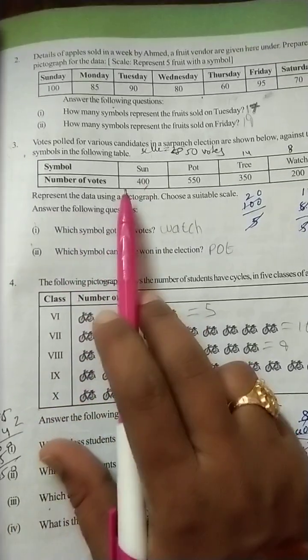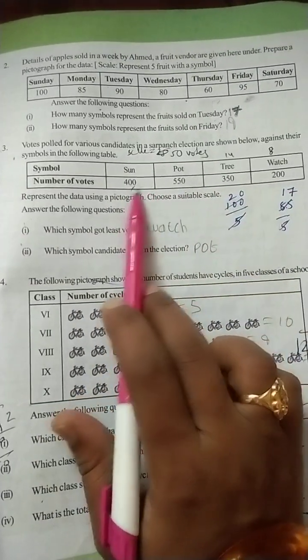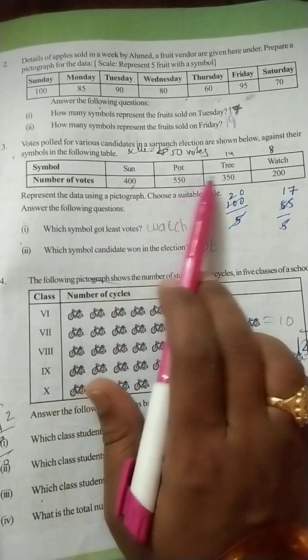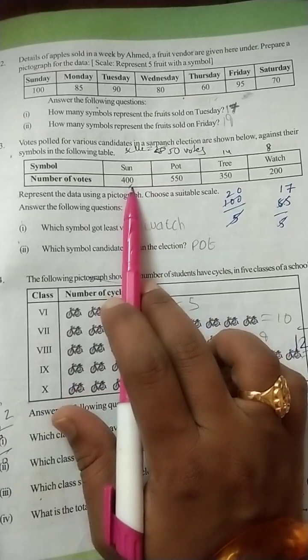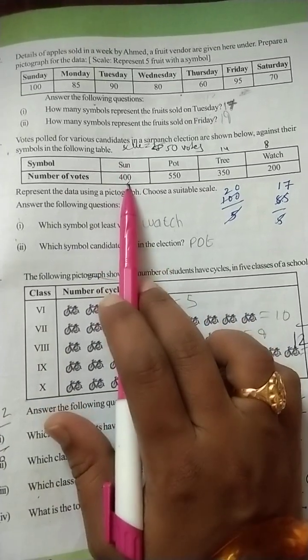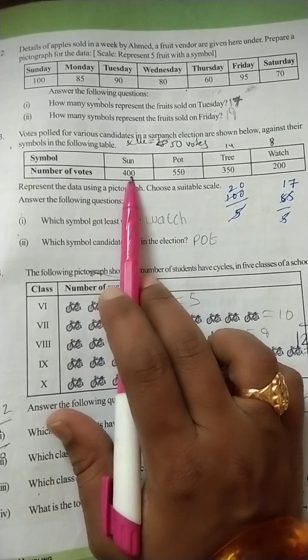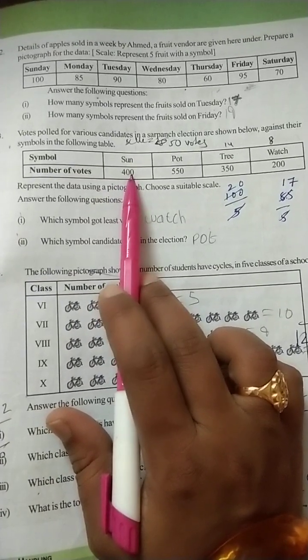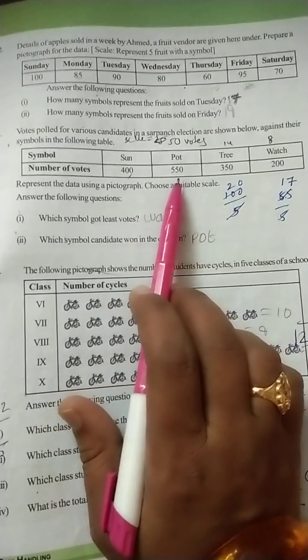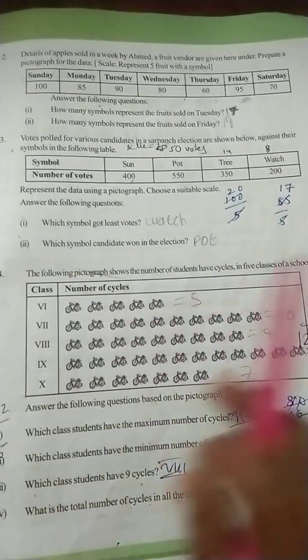See here, particular symbols got a number of votes. This data we can represent in pictographs. But here, these 450 are large numbers. If we draw pictographs, it will take a lot of time. To overcome that problem, just we need to take proper scale. By using scale, we should reduce the numbers. Then we can represent given data in pictographs. How to reduce the given numbers? By using scale.